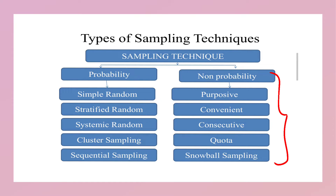In this video we are going to only discuss the probability sampling techniques: simple random sampling, stratified random sampling, systematic random sampling, cluster random sampling, and sequential sampling. So one by one we can see each of these.